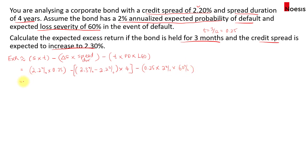If you calculate this, the expected gain from the spread during the 3 months is 0.55%, the expected loss from the increase in spread is 0.4%, and the expected loss from default losses is 0.3%. Once we net off these amounts, we get negative 0.15%. So from this bond, we expect an excess return of negative 0.15% if held for 3 months under these spread expectations.